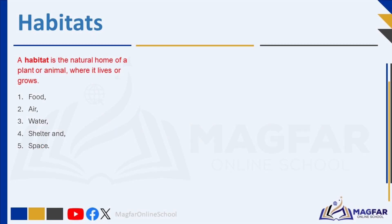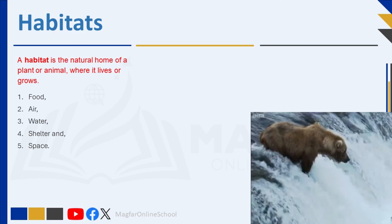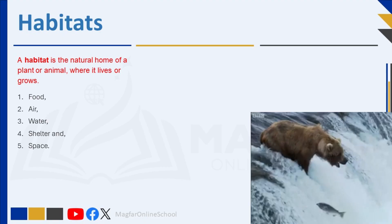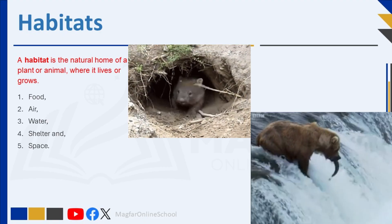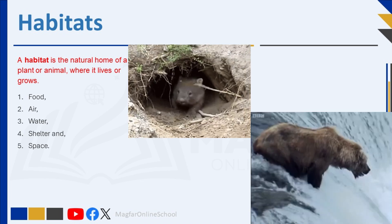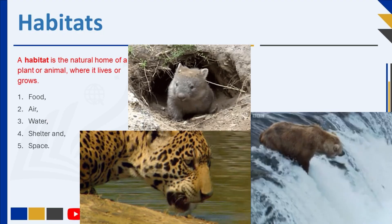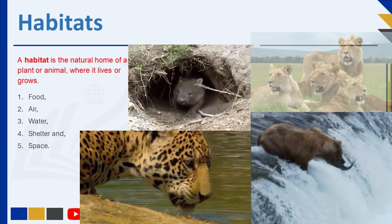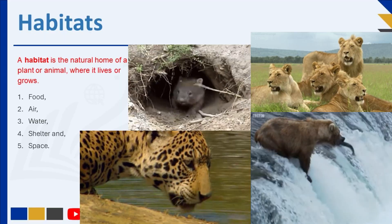The earth is home to the most amazing diversity of animals and plants. Each animal and plant naturally chooses where it wants to live — its habitat. A habitat is the natural home of a plant or animal, where it lives or grows. Habitats provide resources plants and animals need to stay alive. For example, an animal needs mainly five things to survive in its habitat.